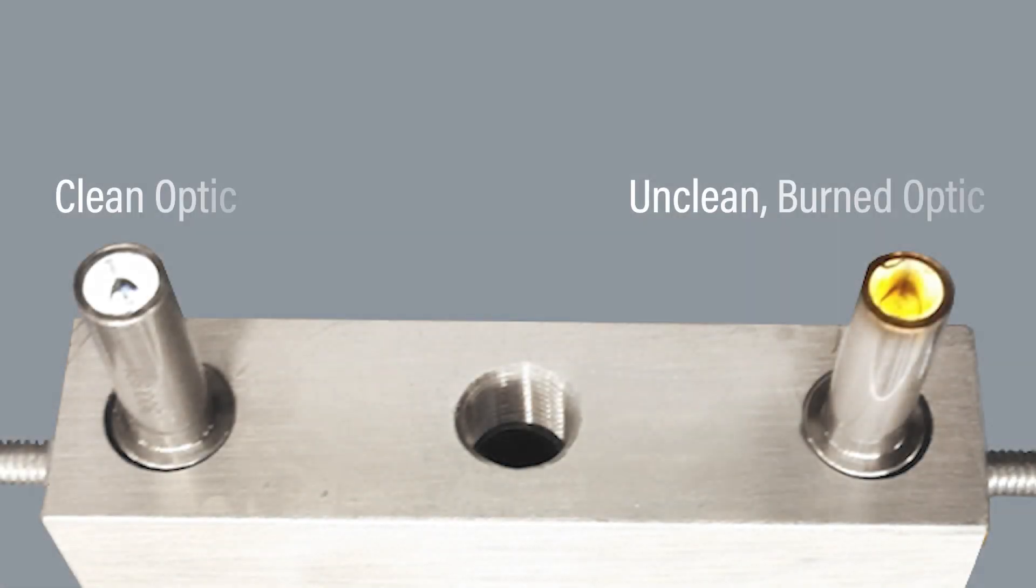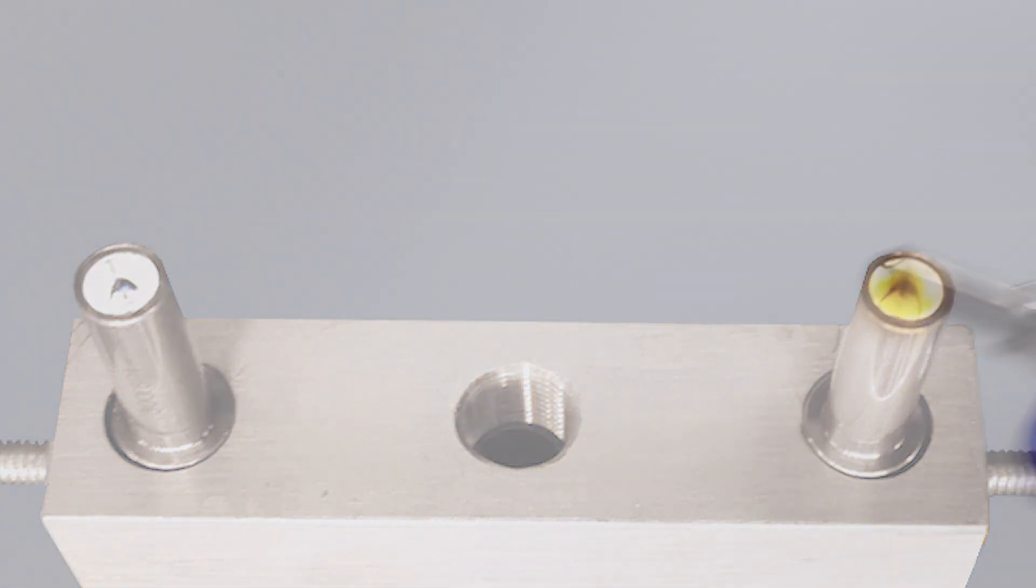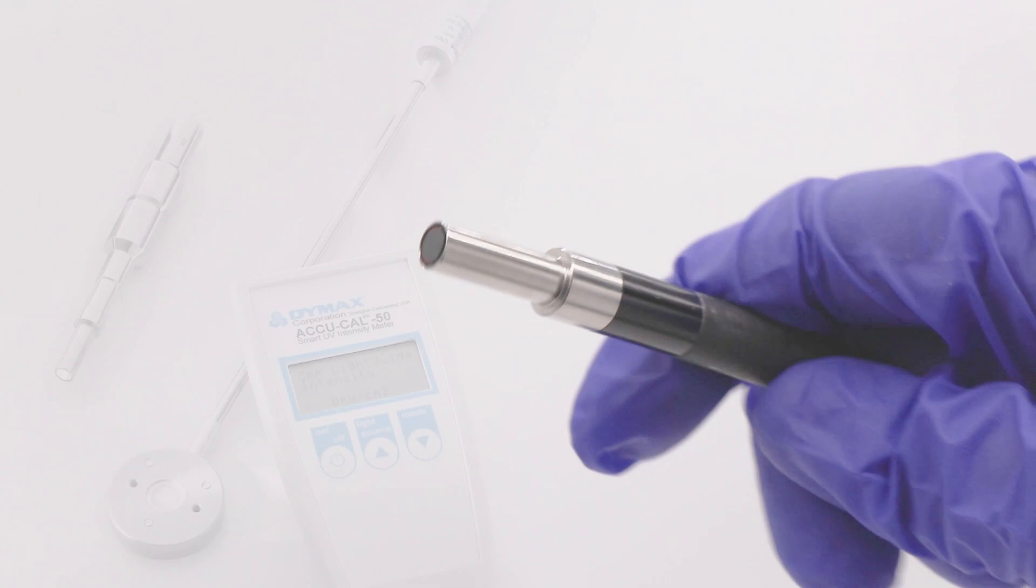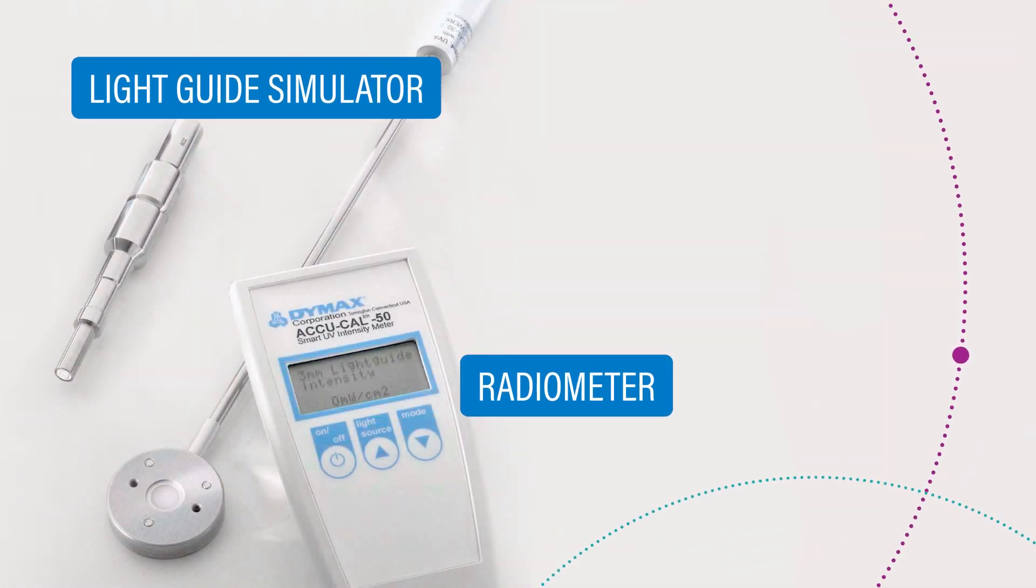Blocked light could lead to the burning of the light guide optics. However, when the end of a light guide is inspected, foreign materials and deposits may not be visible. Users should employ a radiometer and light guide simulator to measure if a light guide has degraded.